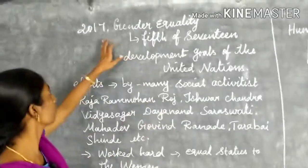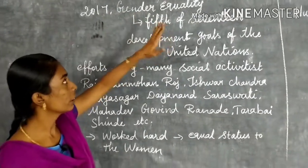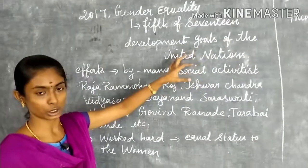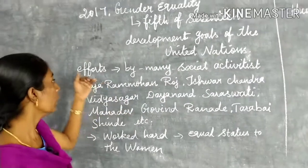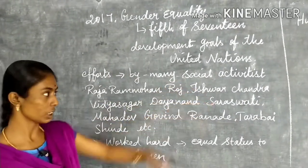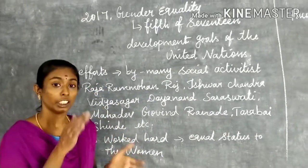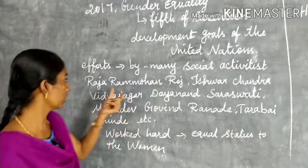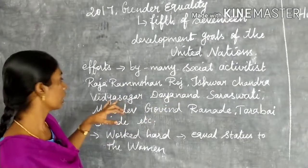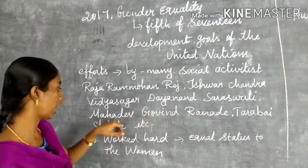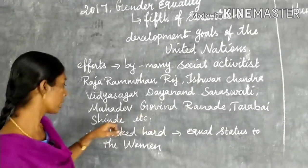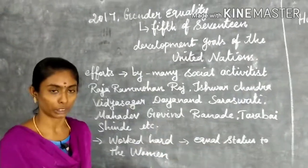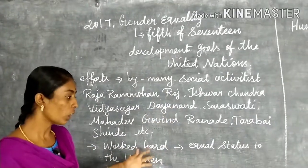According to 2017, gender equality is the 5th of 17 Sustainable Development Goals of the United Nations. Many social activists made efforts in the 19th century for this cause. For example, Raja Ram Mohan Roy, Ishwar Chandra Vidyasagar, Dayanand Saraswati, and others worked hard to achieve equal status for women.